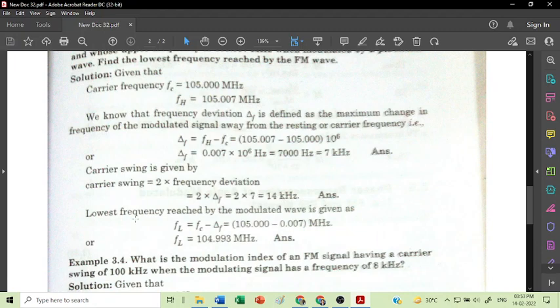Now we need to find out the lowest frequency. The lowest frequency FL is Fc minus delta F. It equals 105 minus 0.007 MHz, and FL becomes 104.993 MHz. This is the answer.